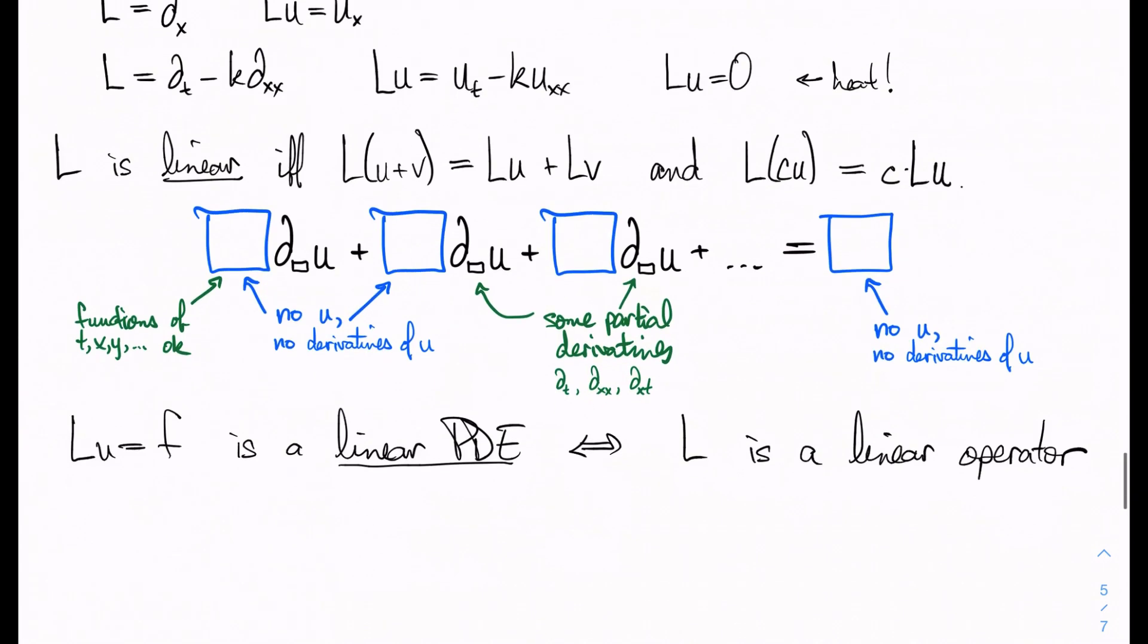We also say that Lu equals f is homogeneous if and only if the forcing function f is identically equal to zero. So I'm using the triple bar here for identically equal.